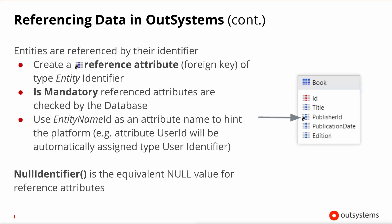To implement a foreign key in OutSystems, you use a reference attribute in the second entity, and it needs to be of the data type of the identifier of the first entity you want to point to. By setting this mandatory, you tell the database to enforce a non-null value every time a new record is inserted. If you name the attribute EntityNameID, by the name-matching accelerator described in the other data modeling lesson, you immediately get an attribute of the target entity identifier type. To insert a null, you can use the null identifier function.